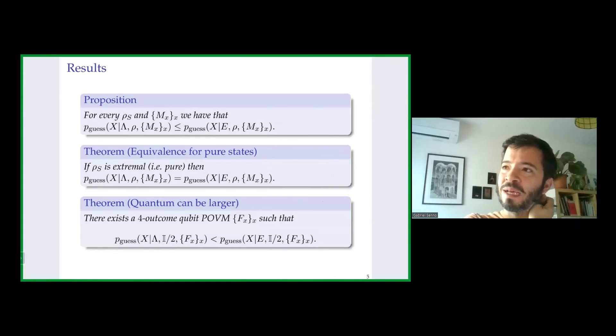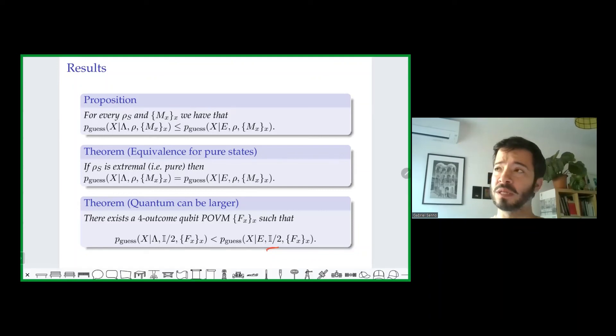And finally, I guess our most important result, which was actually obtained after the submission to QCRIP, but I thought I should anyway mention it in this talk, is that in general these two guessing probabilities do not coincide. We have found a family of four-outcome qubit POVMs for which, when measured on the maximally mixed state, the quantum guessing probability is unity by construction, but the classical guessing probability is not.